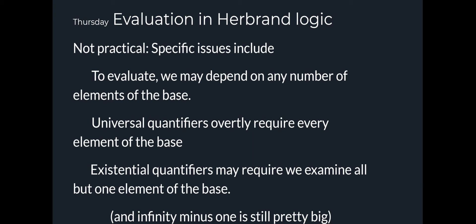But evaluation, therefore, becomes complex beyond reason. We have to depend on any number of elements of the base that could be infinite. A universal quantifier explicitly says that we have to use every element of an infinite base or a potentially infinite base. Existential quantifiers may require that we examine all but one element of the base, which is still, practically speaking, infinite. So evaluation is tricky.